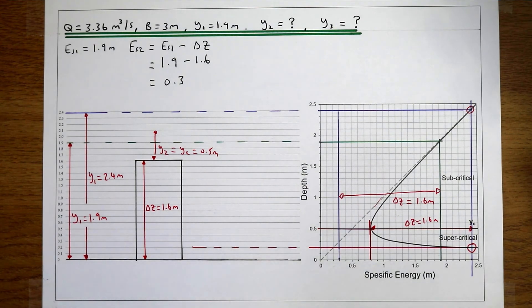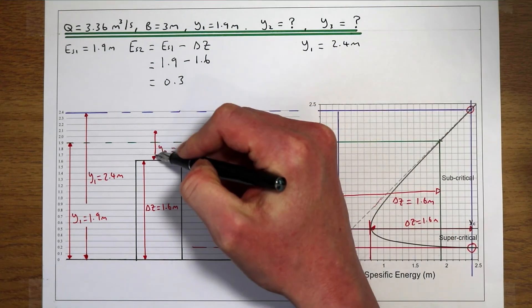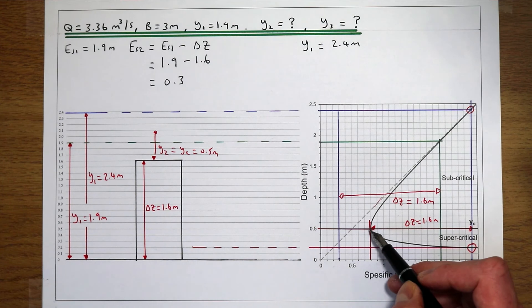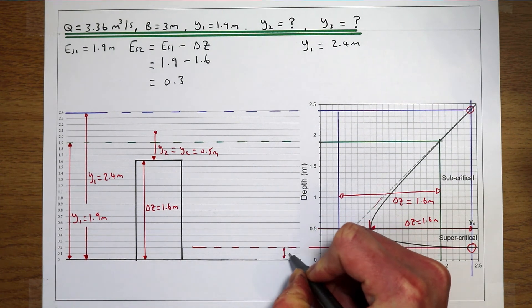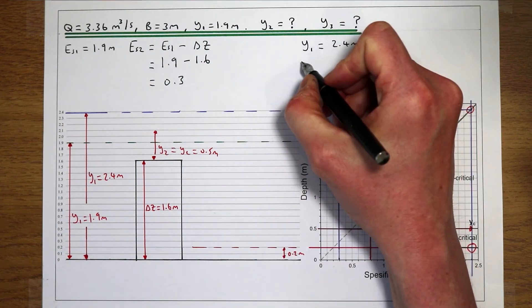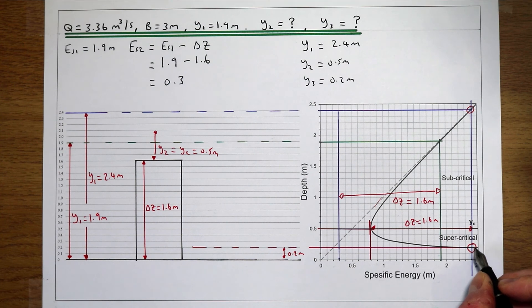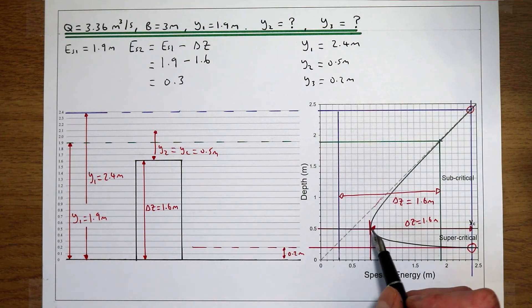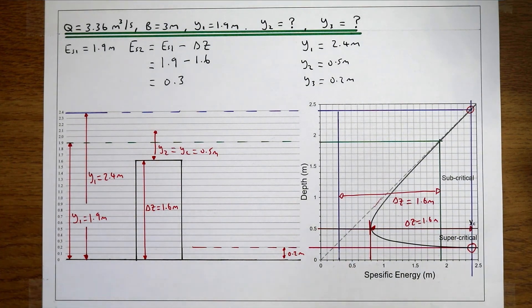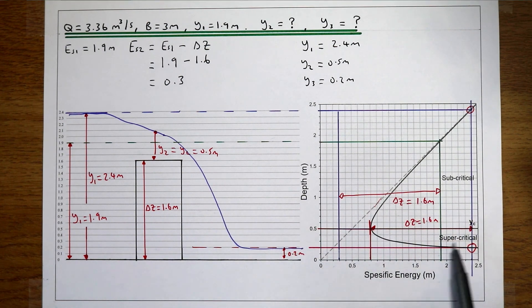Y1 has had to increase to 2.4 metres because we need to maintain the critical flow depth over the weir and can't drop below the minimum energy level. Y2 is the critical flow depth over the weir, and our downstream Y3 is going to be 0.2 metres — the alternate flow depth at our new initial specific energy level. Since we've gone through the critical flow depth, flow has transitioned from subcritical to supercritical. So our final flow profile starts at 2.4 metres, decreases to the critical flow depth of 0.5 metres over the obstruction, and then after the obstruction becomes supercritical flow at a depth of 0.2 metres.